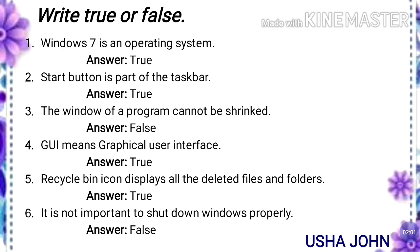The window of a program can be shrinked — false. Fourth one: GUI means graphical user interface — true. Fifth one: recycle bin icon displays all the deleted files and folders — true. Sixth one: it is not important to shut down Windows properly — false, you should shut down properly.